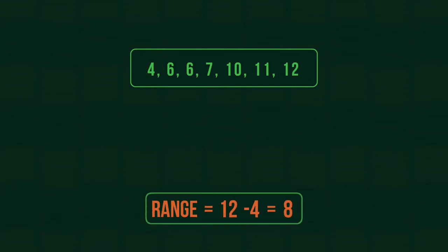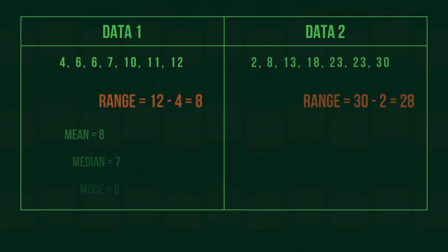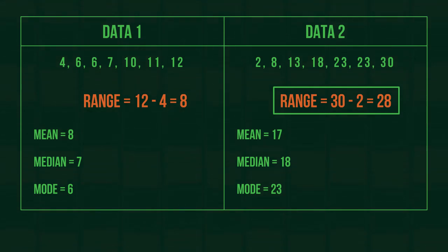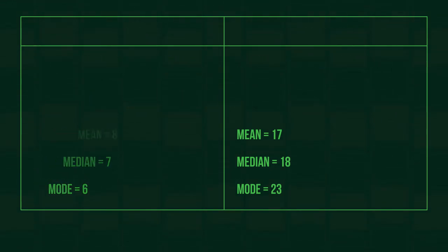The range provides context for the mean, median, and mode. If the range is large, then the mean, median, or mode might not represent the data very well. Whereas if the range is small, then they will represent the data well.